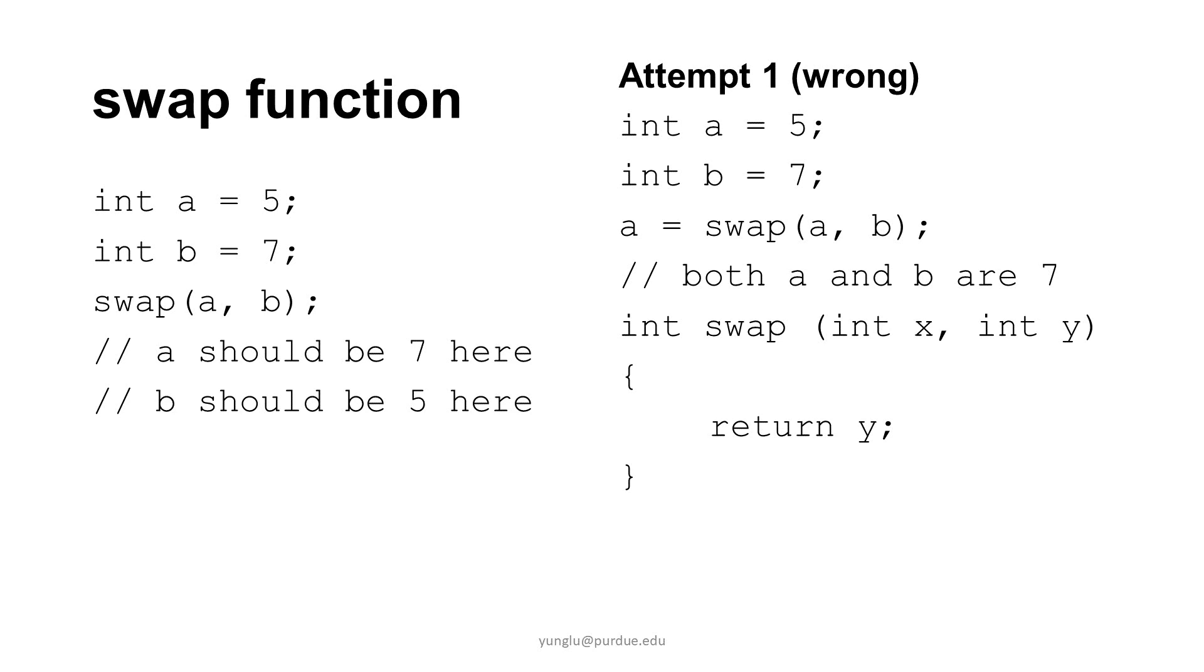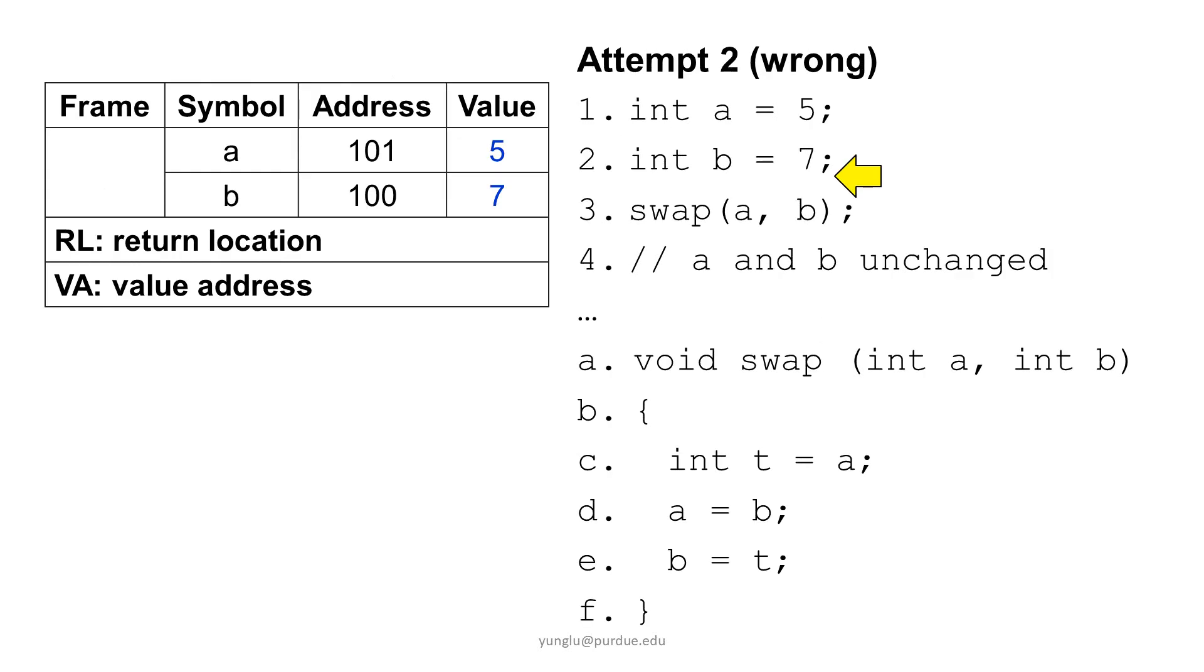Let's consider the first attempt. This function takes two arguments and returns the second. The returned value is stored in a. This does not work because a becomes 7 and b is still 7. Let's consider another method. This function uses a local variable t to store the value from argument a. Then, the function assigns b's value to a. The value of t is assigned to b. Will this work?